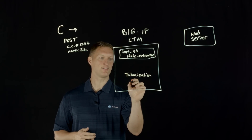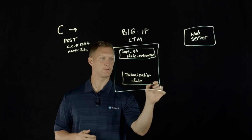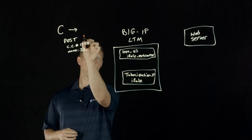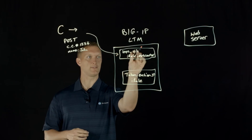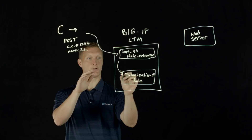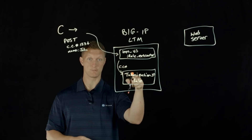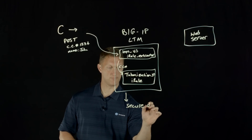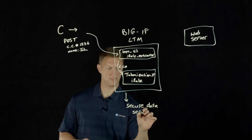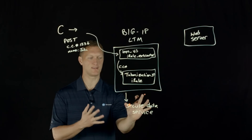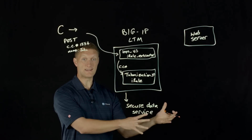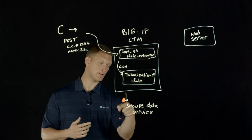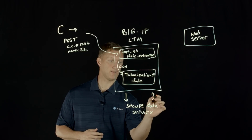This tokenization virtual server also has an iRule. This is a VIP-to-VIP solution. The POST data comes in, hits the first virtual server, which extracts the credit card number and sends it down to the tokenization virtual server. That virtual server makes a connection out to what I'll call a secure data service — a service you connect to, send sensitive data, it encrypts that data, and sends back the encrypted form.